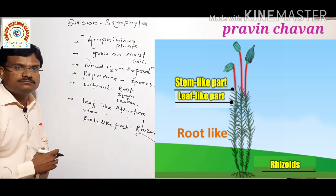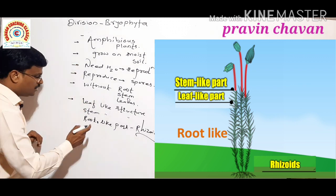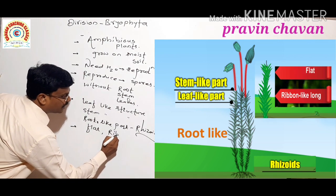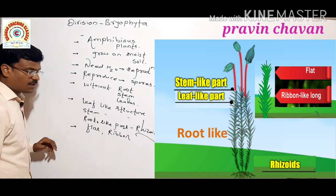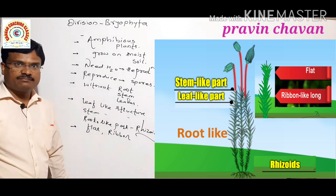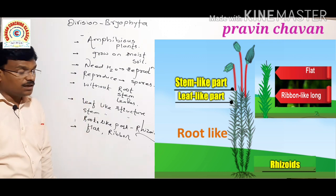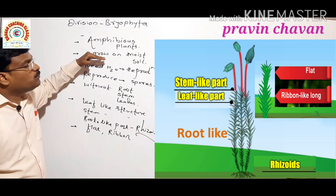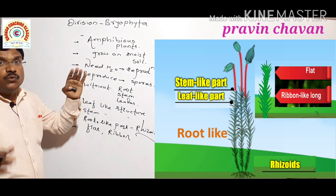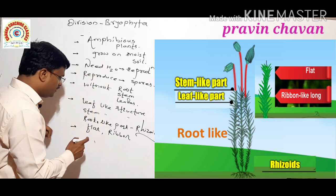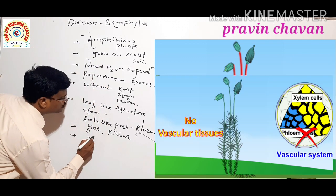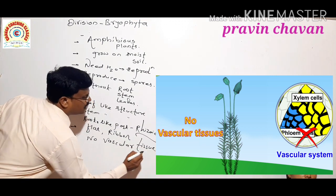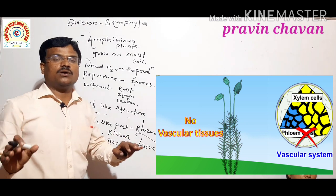If you closely observe the figure, the plant body of a Bryophyta plant is flat and ribbon-like. As they grow in moist soil, no vascular tissues are present.